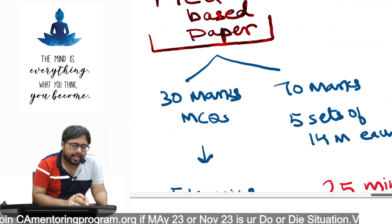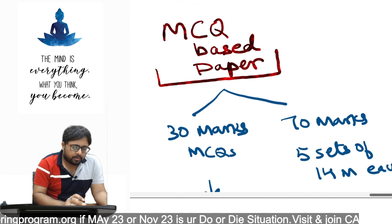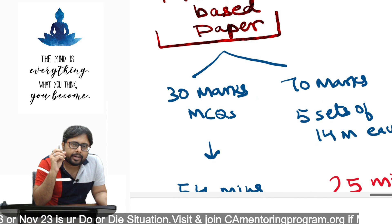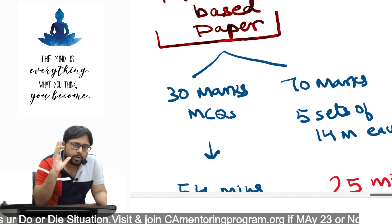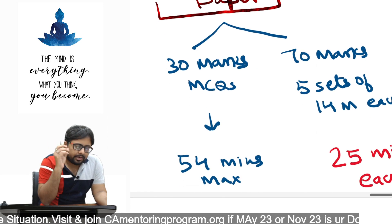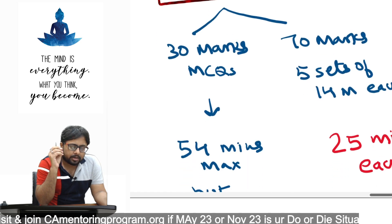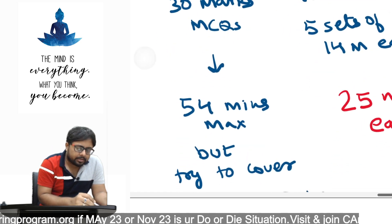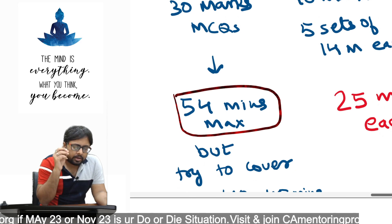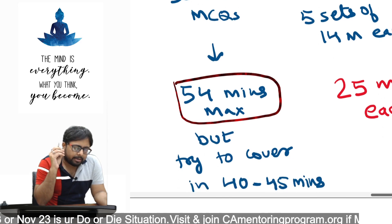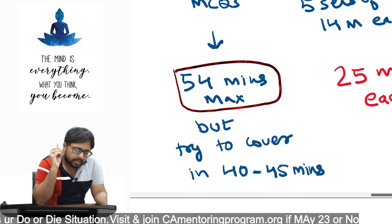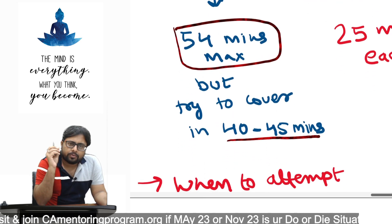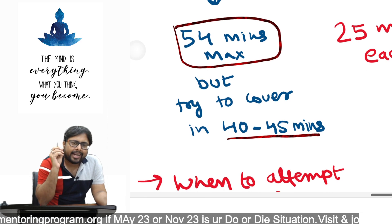If it is an MCQ-based paper where 30 marks are MCQ, you might ask: should I attempt MCQs at the beginning, middle, or end? If there are 30 MCQ marks, you should ideally give 54 minutes to them, but I suggest you try to finish the MCQs within 40 to 45 minutes.